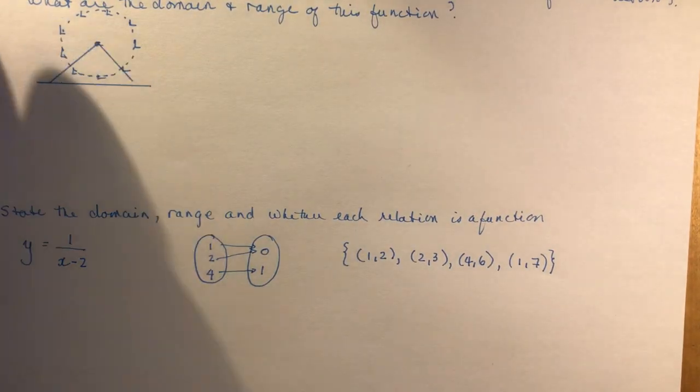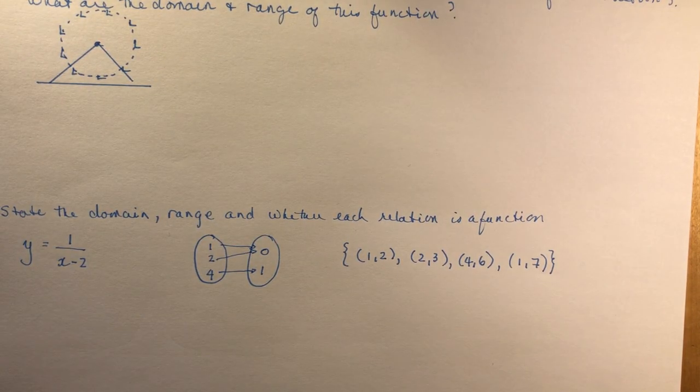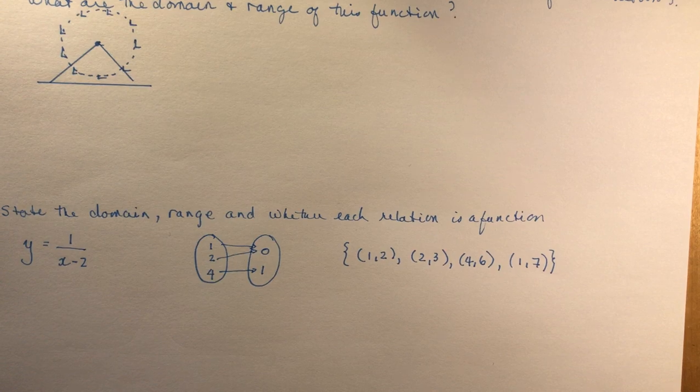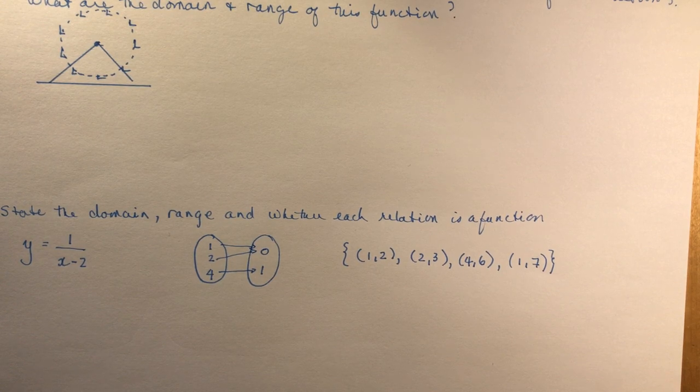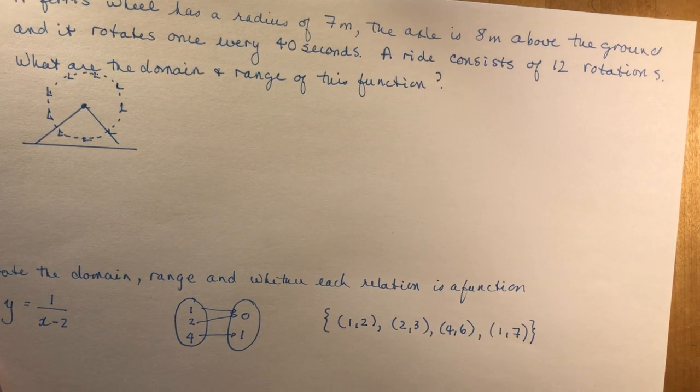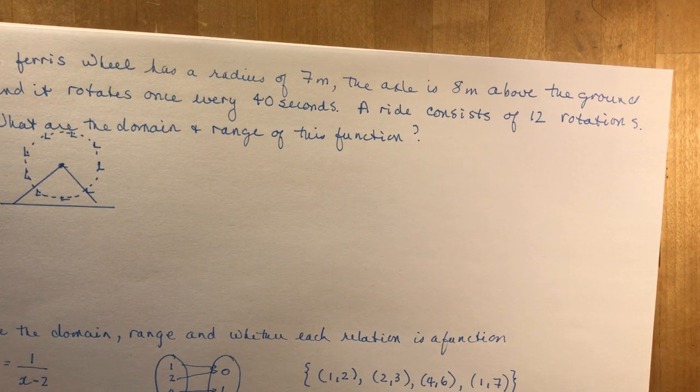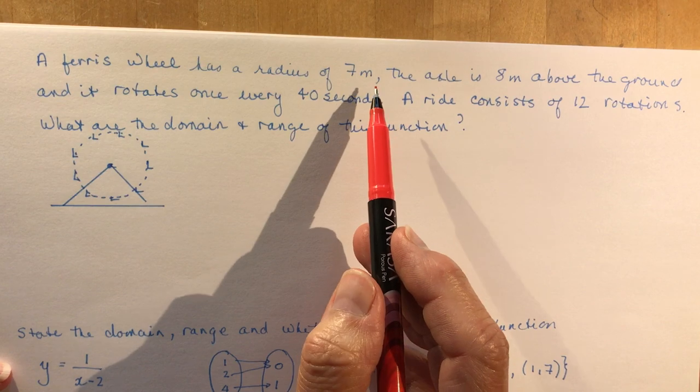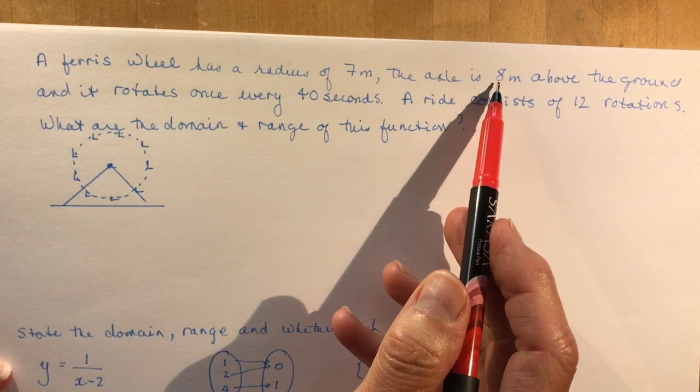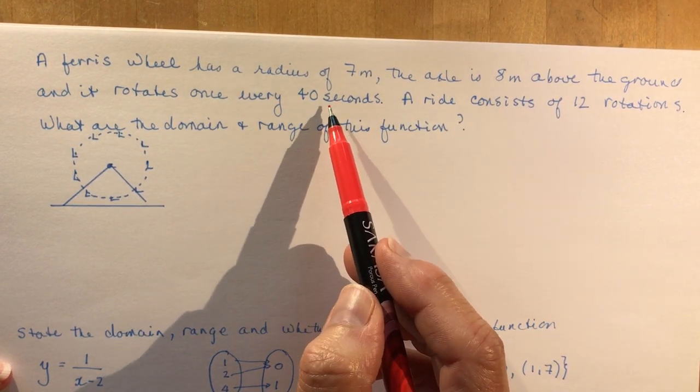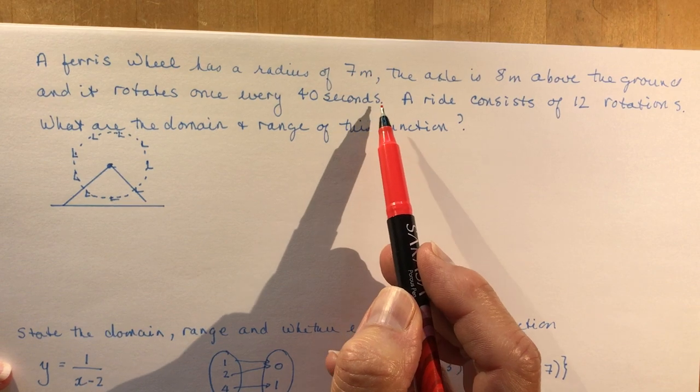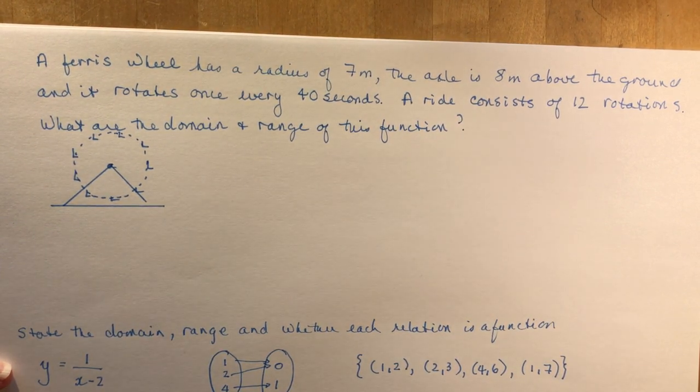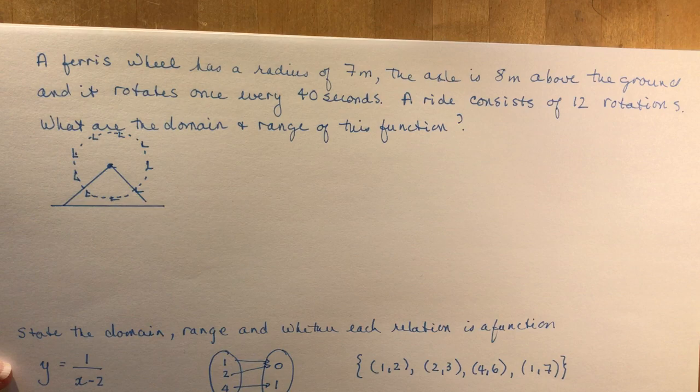Moving on to a little word problem here. We have another word problem about a ferris wheel. Now you probably remember ferris wheel questions. You found those in your trigonometry when we did trigonometry in grade 11. So it says a ferris wheel has a radius of seven meters. The axle is eight meters above the ground and it rotates once every 40 seconds. A ride consists of 12 rotations. What are the domain and range of this function?